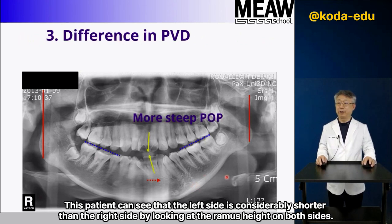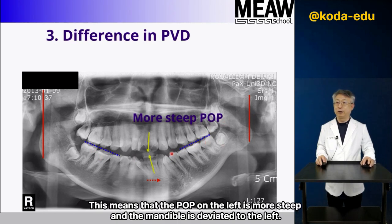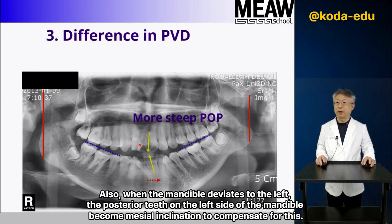This patient shows that the left side ramus height is considerably shorter than the right side. In this case, the left POP is steeper than the right side, meaning the POP on the left is more steep and the mandible is deviated to the left. When the mandible deviates to the left, the posterior teeth on the left side of the mandible become mesially inclined to compensate for this.